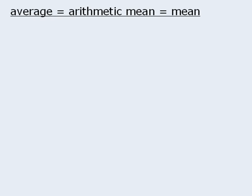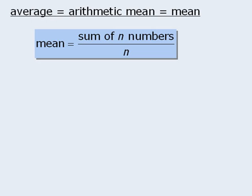In this module, we will use these three terms interchangeably. To find the average of n numbers, we calculate the sum of the n numbers, and then divide this by n.